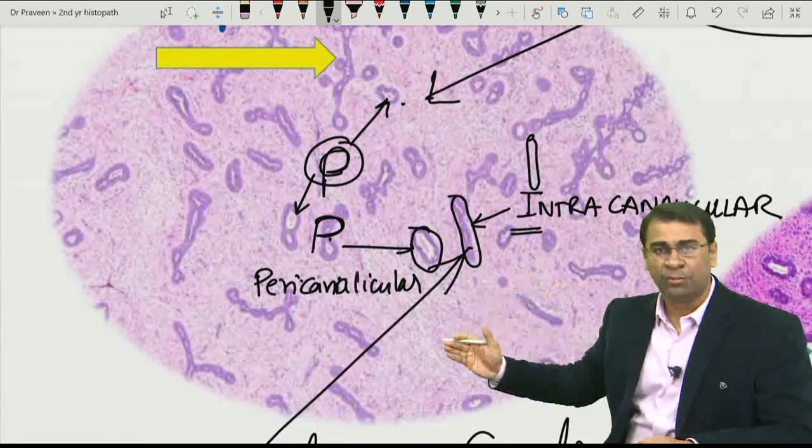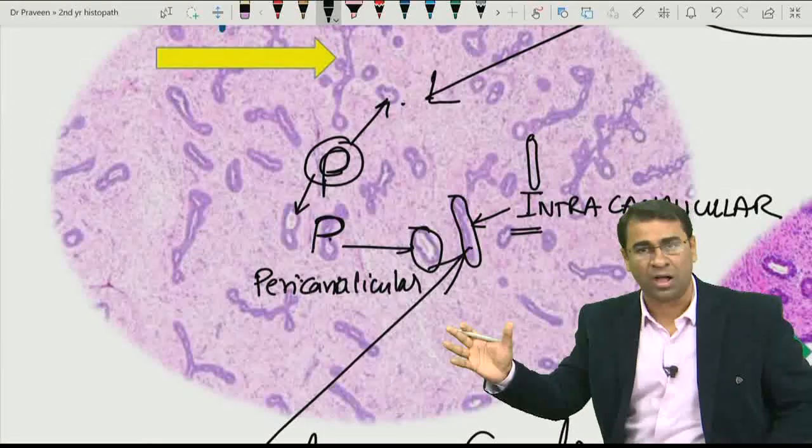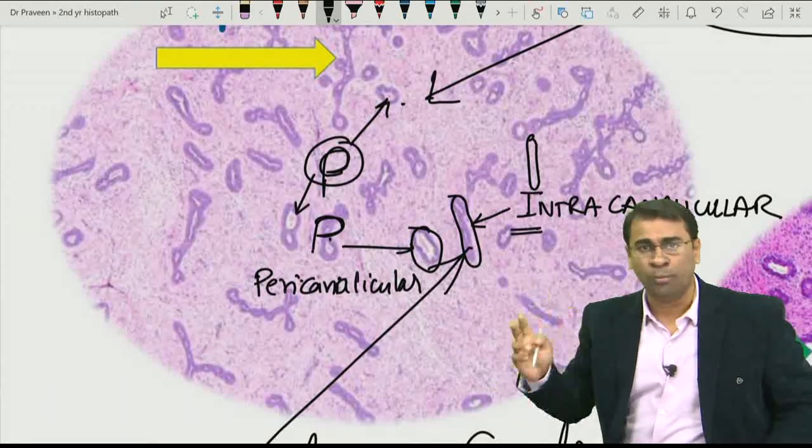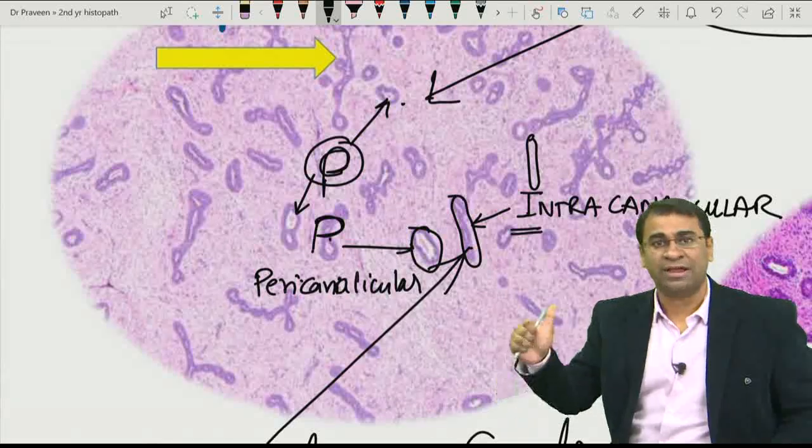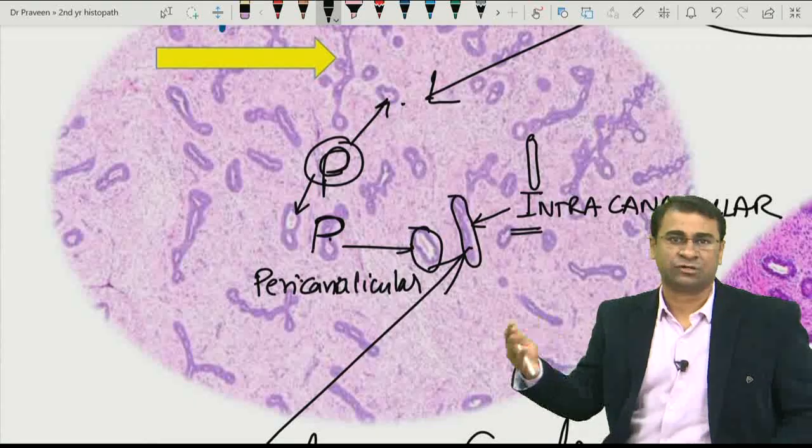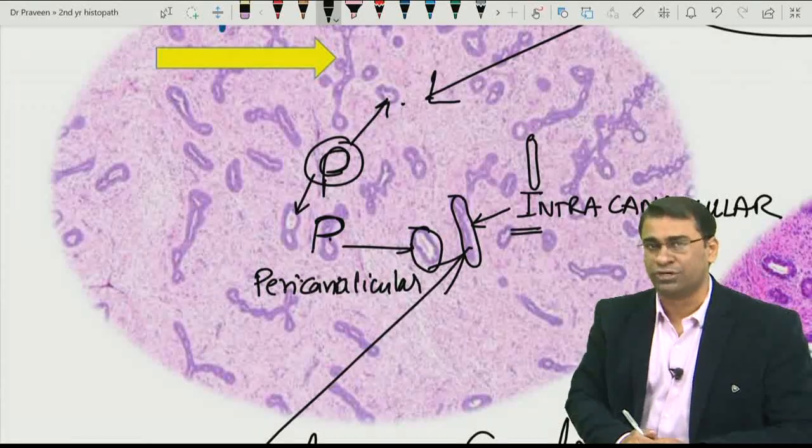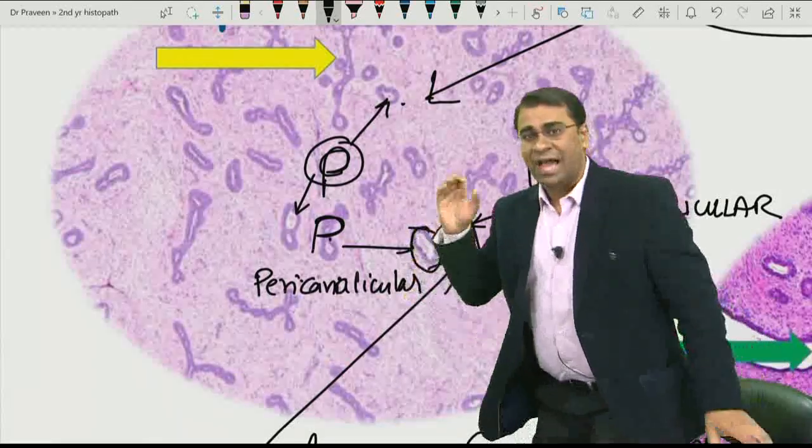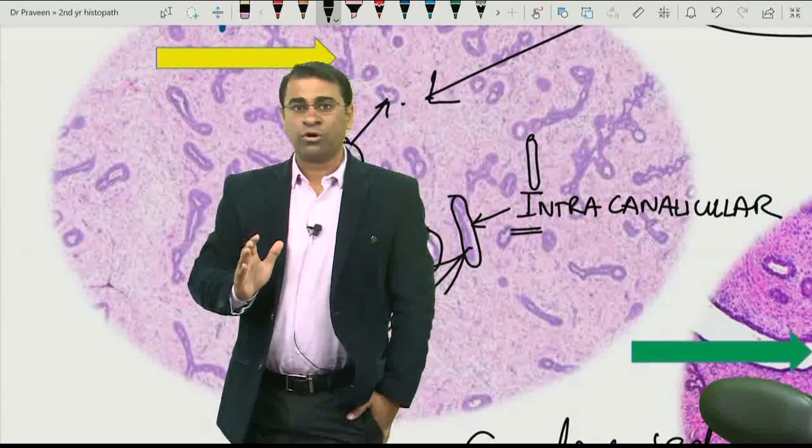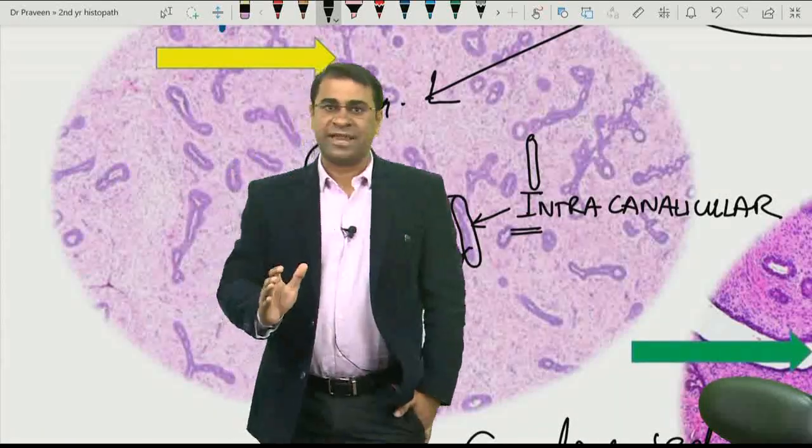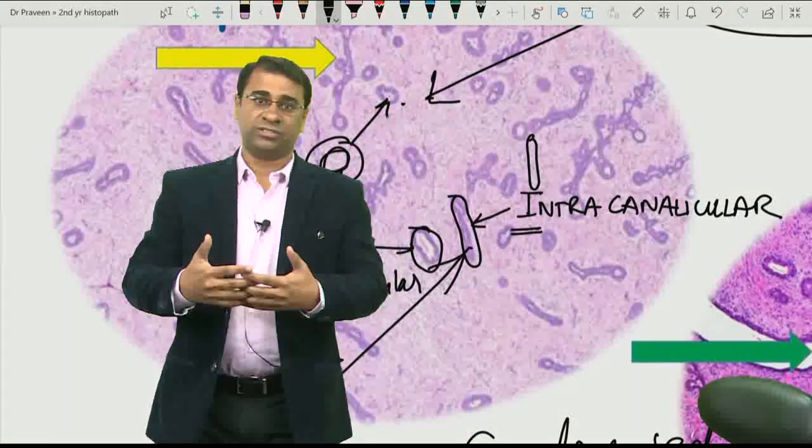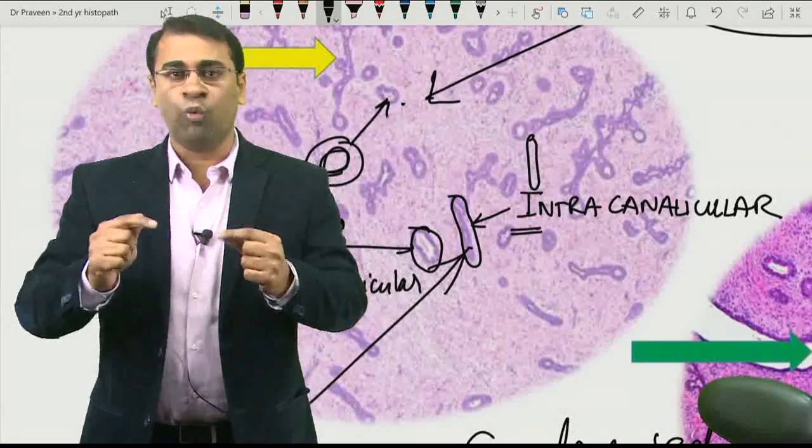This is fibroadenoma, the benign proliferation of stroma of the glands. The question is, what stroma increases? The answer is intralobular stroma, not interlobular stroma. It is a benign tumor of the breast. It can be locally excised because it is benign, and therefore, it has a good prognosis, usually occurring around 20 to 40 years of age. So, this is what the actual biopsy is. If you know the histology well, your histopathology will always be good. So, we have brought to you multiple images and multiple slides in the same manner, discussing with the histology, then the histopathology, and then its correlation to the pathophysiology. Wait for it, and do watch these videos.